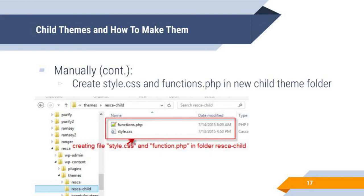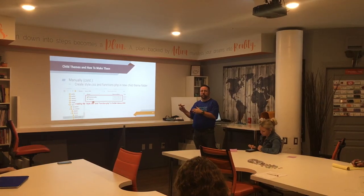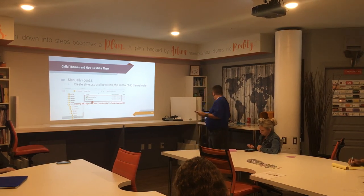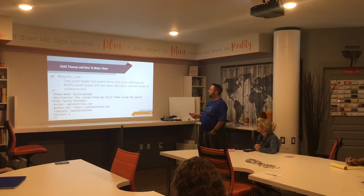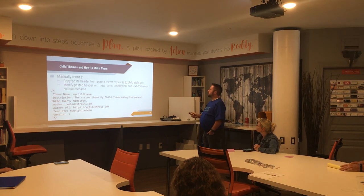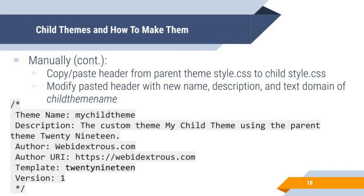You could activate that theme at this point and it would be good to go, because if there's nothing in the child, it just grabs whatever's in the parent. But the next step is: copy and paste the header from the parent theme's style.css to the child's style.css. At the very top of the parent theme style file you'll see a comment block — that open and close comment contains metadata about your theme: name, description, author, author URL, the template which is the original parent theme folder name, and a version number.